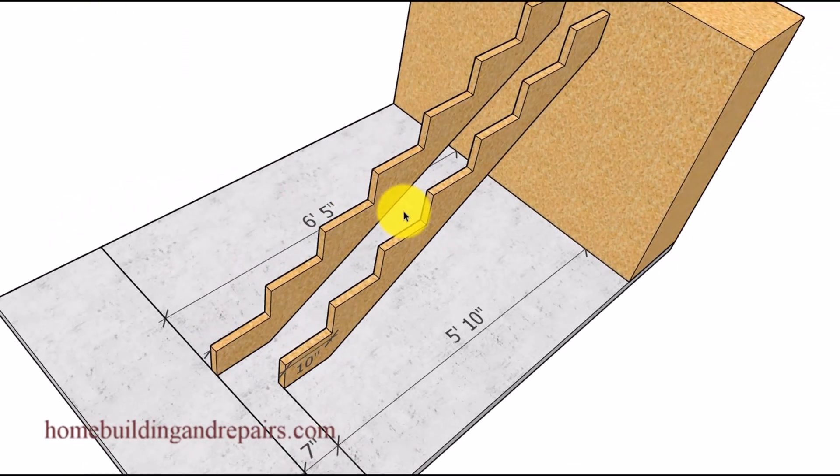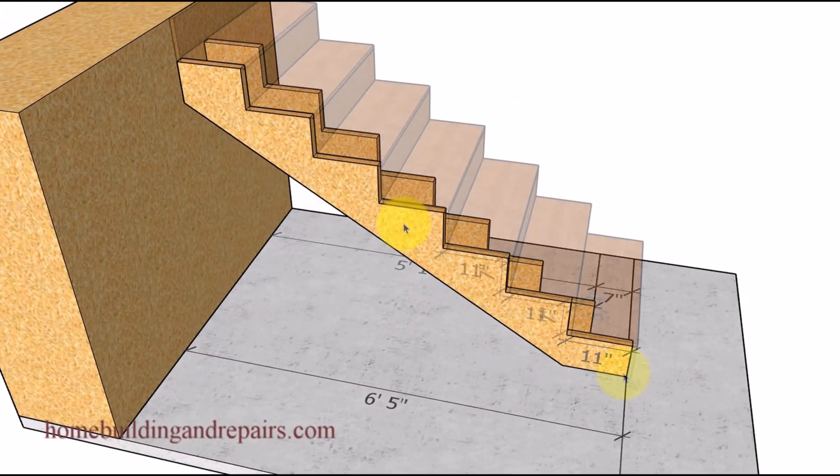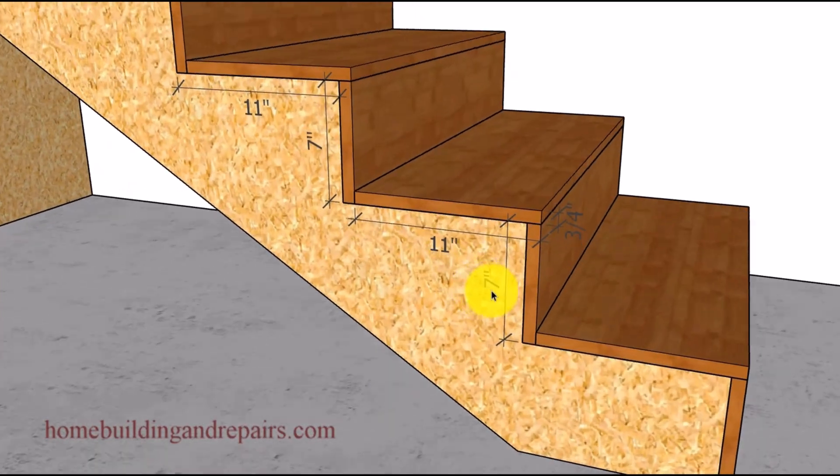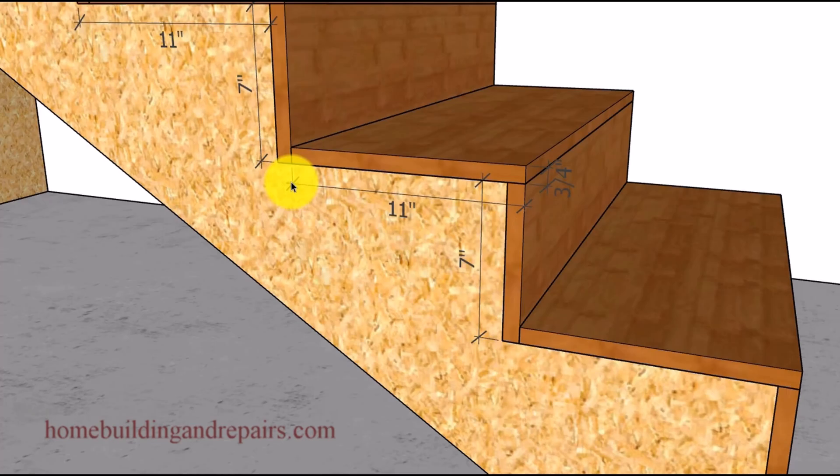If you have the room and you want the overhang you just make the tread 12 inches to solve that problem. However most of the time you're not going to have the room, especially if the building plans call out for 10 inch treads and you made yours 11 inches.